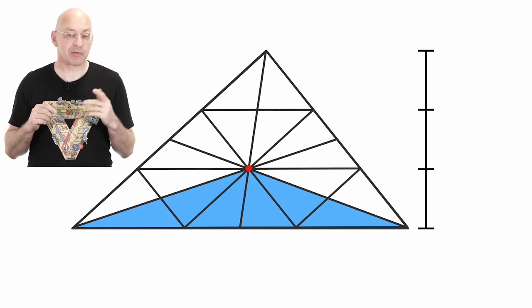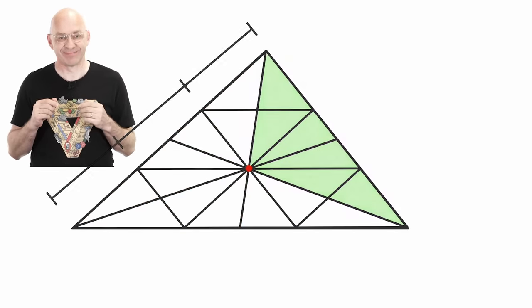also, the area of the blue triangle has to be exactly one third of the area of the original triangle. And, of course, the same is true for the red triangle and the green triangle. Nice! Now,